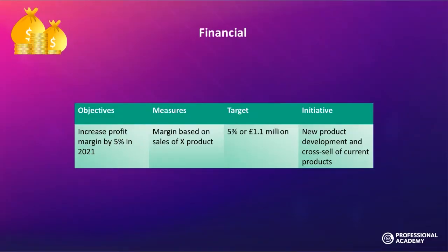The first area we're going to look at is finance — the Balanced Scorecard and the financial area. We're looking at monetary elements. A good financial objective: increasing profit margin by 5% within the next year. How would we measure that? We can measure the margin based on the sales of a specific product, department, division, or service. What's our target? We know our target — it's a 5% margin. What does that look like in monetary terms? 1.1 million. That is our target: a profit margin of 1.1 million.